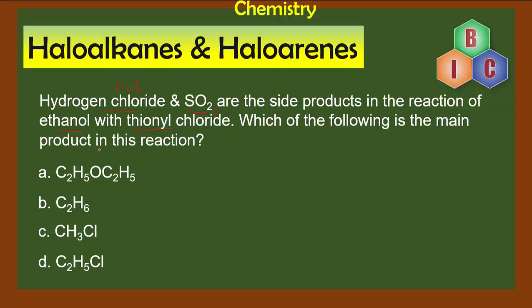Which of the following is the main product in this reaction? Let's look into all four options. Option A is C2H5OC2H5. We know this is ethoxyethane or diethyl ether.